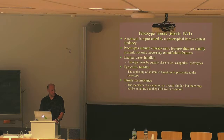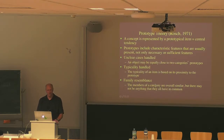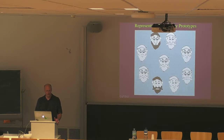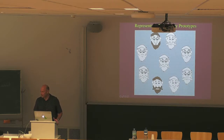Another notion that came to Rosch via Wittgenstein is family resemblances. The idea is that members of a category don't have any single feature in common — like two men, one white-bearded and one black-bearded, one with glasses and one without — yet there is a certain family resemblance that permeates the entire category. That's how we should think about categories.